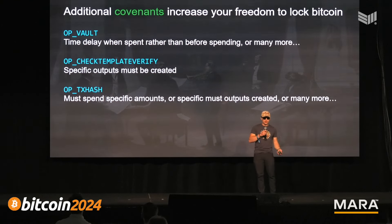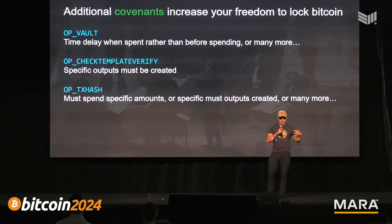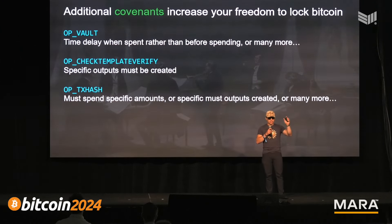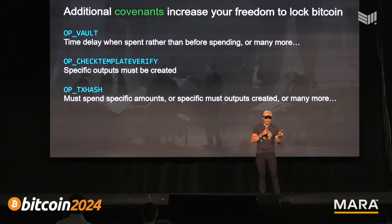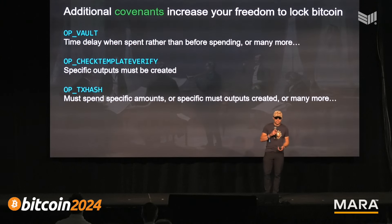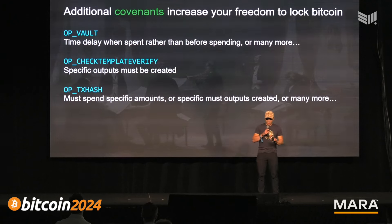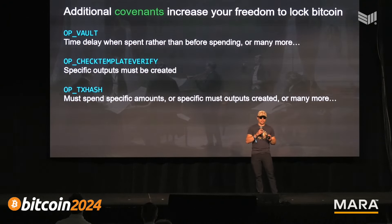Txhash is like the general version of check template verify — you can restrict anything you want about the transaction. In the BitVM panel they talked about how if you can restrict the inputs to a transaction to specific values, txhash is the thing for that. You can specify any piece of your Bitcoin transaction and say the next time this Bitcoin is spent, that piece has to be that way. This lets you do amount restrictions, velocity restrictions — with some nuances — but it can be a very significant increase in the freedom of how you lock your Bitcoin.